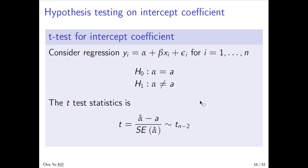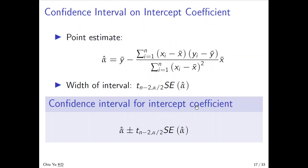Now we discuss hypothesis testing. We want to test whether alpha equals a certain number — usually zero — to check if the intercept is zero. Since alpha-hat follows a normal distribution with the given standard error, the test statistic follows a t-distribution with n minus 2 degrees of freedom. For the confidence interval, the point estimate is the unbiased estimator, and the interval is the estimate plus or minus the margin of error: t_{n-2, alpha/2} times the standard error of alpha-hat. In the next video, we'll discuss the slope.